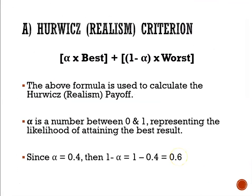We will use alpha equals 0.4 for the examples we are covering. The formula for Hurwitz is alpha multiplied by the best outcome, plus 1 minus alpha multiplied by the worst outcome. So alpha times the best plus 1 minus alpha times the worst.